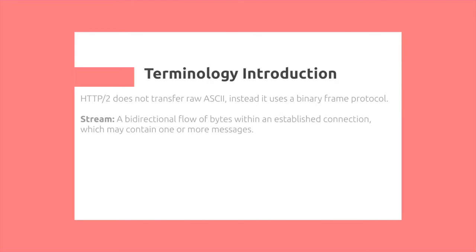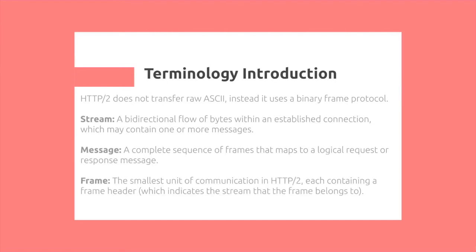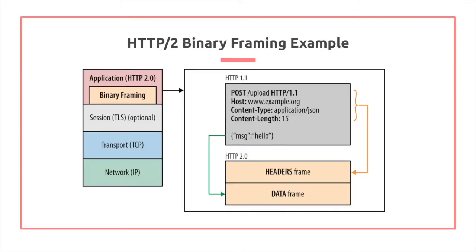A stream is a bi-directional flow of bytes within an established connection, which may contain one or more messages. A message is a sequence of frames that maps to a logical request or response message. A frame is the smallest unit of communication in HTTP/2, each containing a frame header which indicates the stream that the frame belongs to.